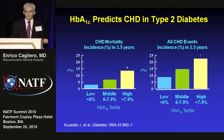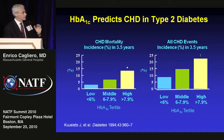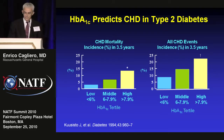If you take patients with type 2 diabetes and look at how tightly controlled they are in terms of glycemic control — looking at low, middle, and high A1c tertiles — both cardiovascular mortality and cardiovascular events are higher in patients with a higher hemoglobin A1c. The higher the A1c, the higher the mortality and cardiovascular disease risk.